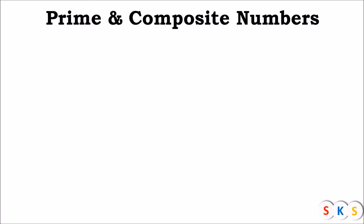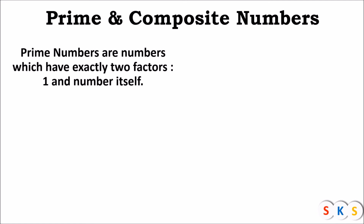Prime and composite numbers. What are prime numbers? What are composite numbers? Let's see now. Prime numbers are numbers which have exactly two factors, that is 1 and the number itself.